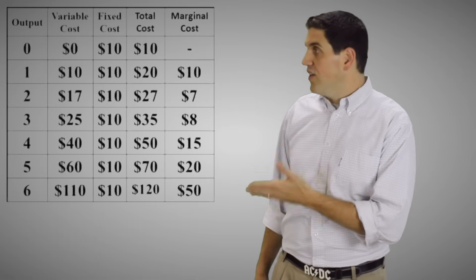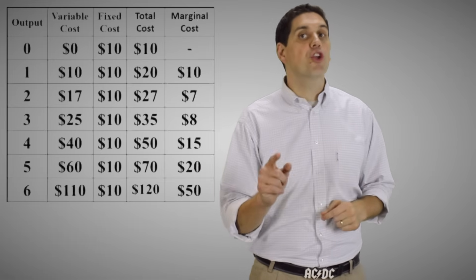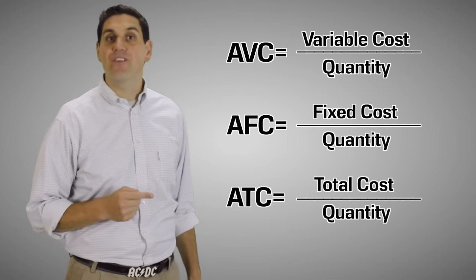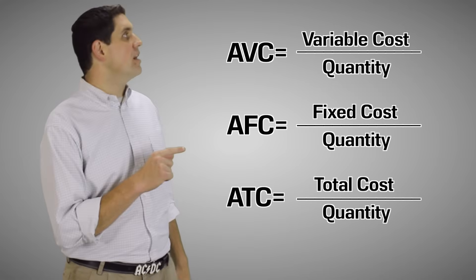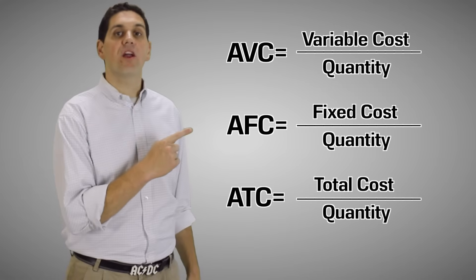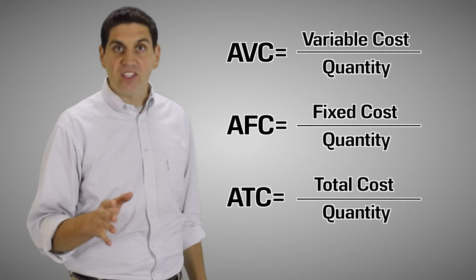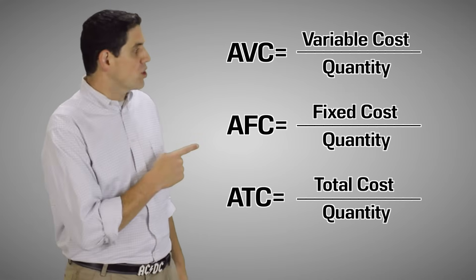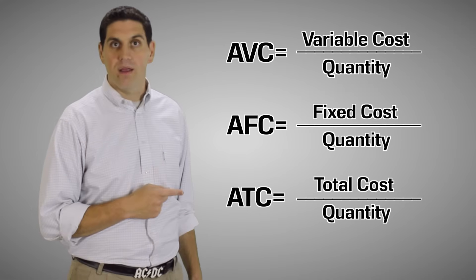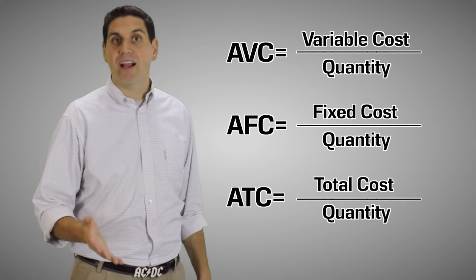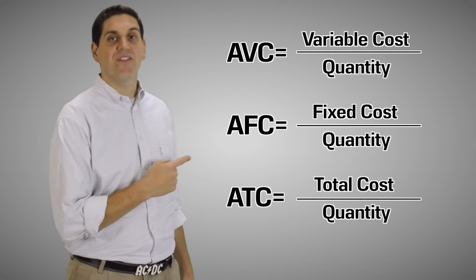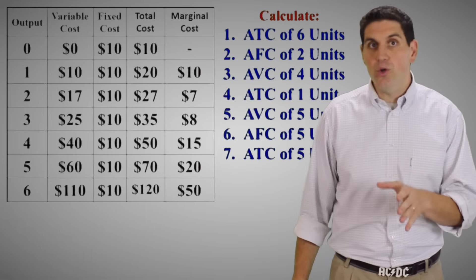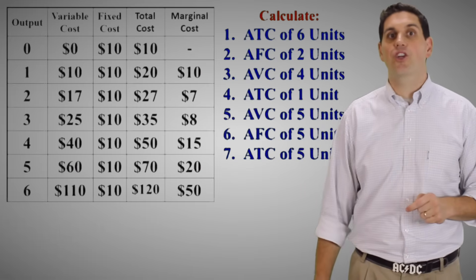Now that you can calculate these costs, let's calculate the per unit cost. There's average variable cost, average fixed cost, and average total cost. The average variable cost is the total variable cost divided by the quantity. The average fixed cost is the fixed cost divided by the quantity. And the average total cost is the total cost divided by the quantity. Most of the time you'll see these by their acronyms: AVC, AFC, and ATC. Get used to that. Now let's see if you can use those equations and calculate the average cost curve.